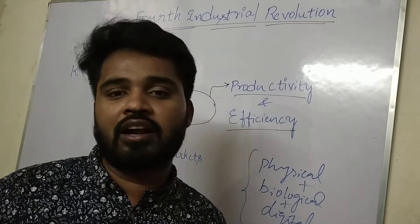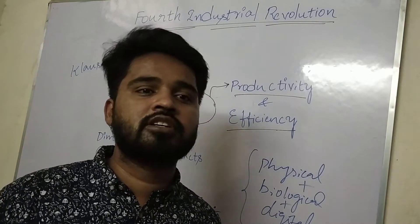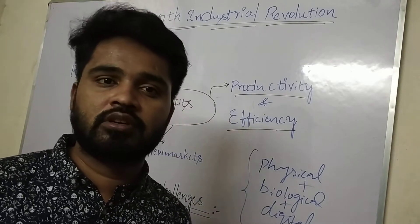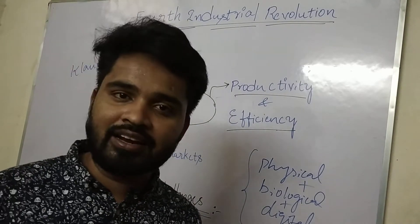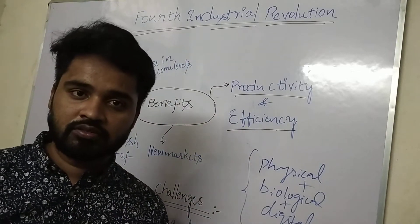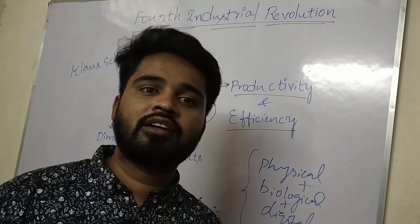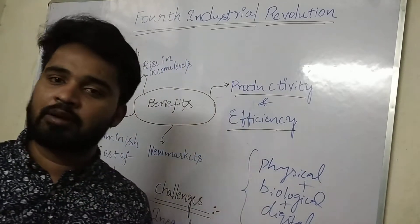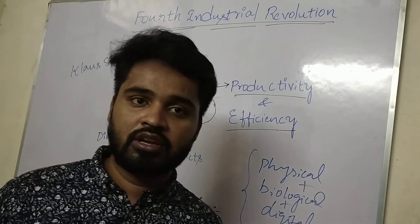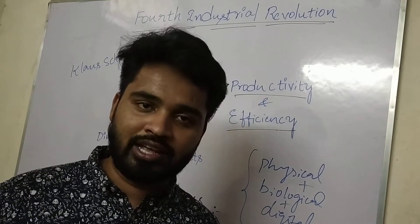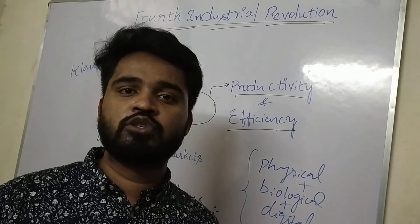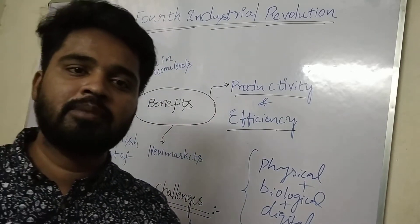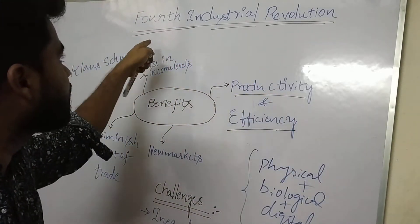During the First Industrial Revolution, production was powered by the steam engine. During the Second Industrial Revolution, transportation, electricity, and chemical industries were developed. Coming to the Third Industrial Revolution, applied electronics and information technology were dominant.